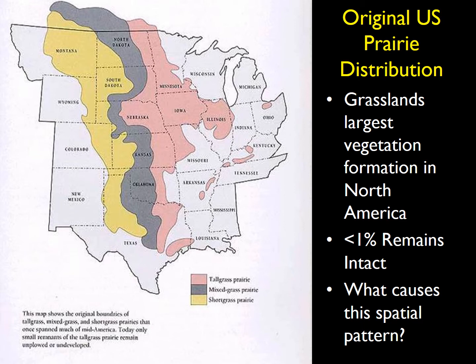If we look at the original distribution of the prairie and grassland ecosystems in the U.S., these are massive. Grasslands were the largest vegetation formation in North America, on the Great Plains. But of the area that was naturally grassland, less than 1% remains intact. We talked about how much wetlands have been destroyed — grasslands as well have been turned into all other different kinds of ecosystems that we find more amenable to human colonization.